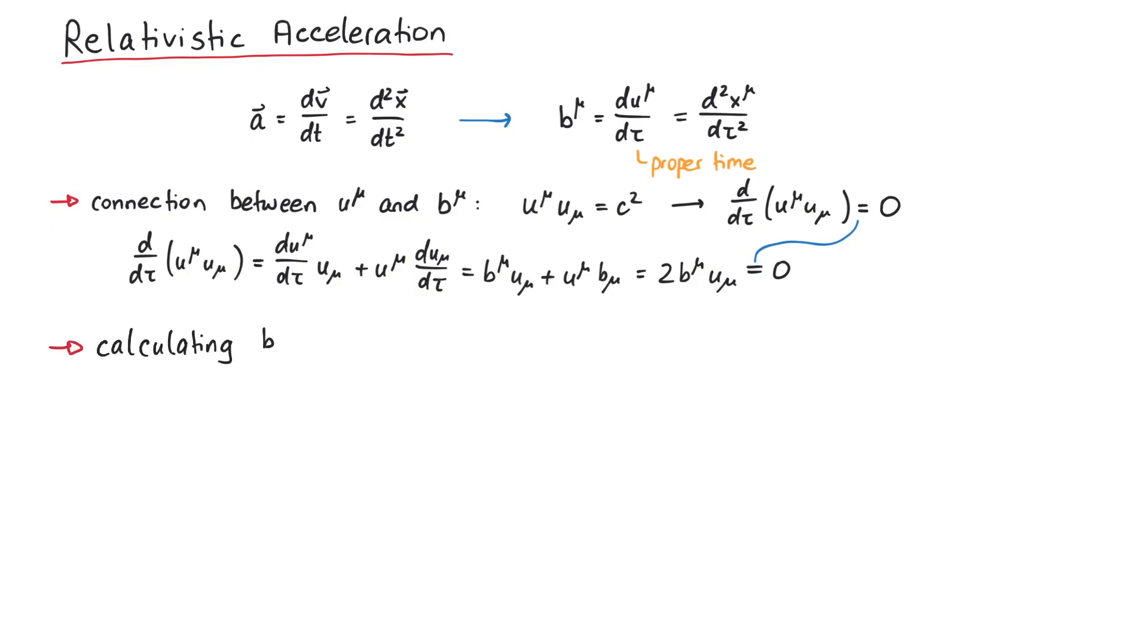Now let us calculate the 4-acceleration. The derivative with respect to proper time can be written as gamma times a regular time derivative, and 4-velocity is given by gamma times c v. In order to calculate this, we need the time derivative of the Lorentz factor gamma, which yields gamma cubed times the inner product of velocity and acceleration, divided by c squared.